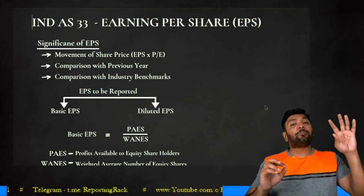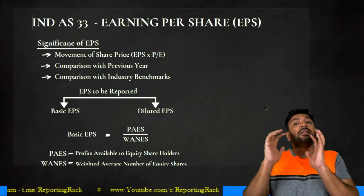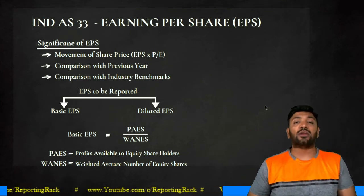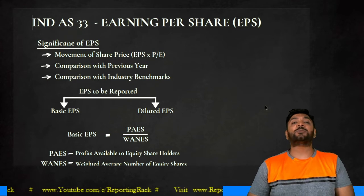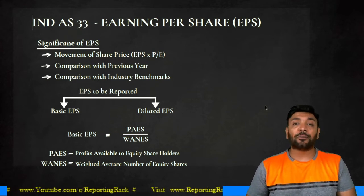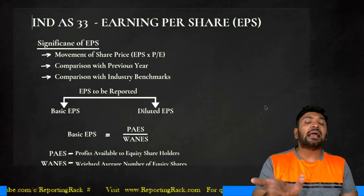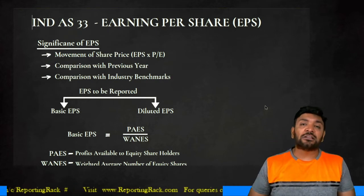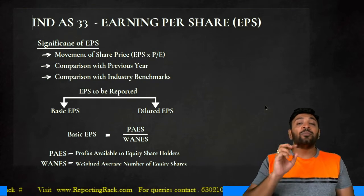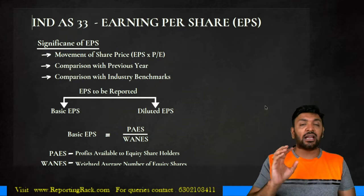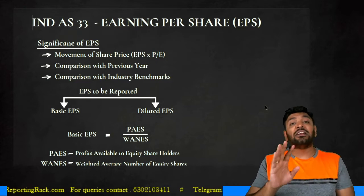PAS — profits available to equity shareholders — equals profit after tax minus the amount of preference dividend. After paying taxes and preference dividend, the balance profits are available for distribution to equity shareholders. But is it compulsory to pay preference dividend always? Not necessarily. Whether preference dividend should be deducted depends on the classification of preference shares.